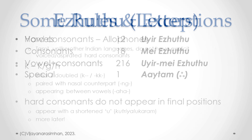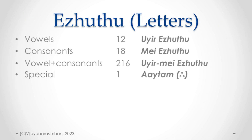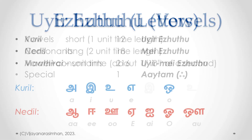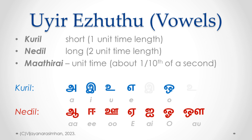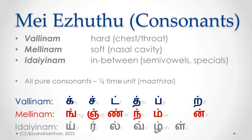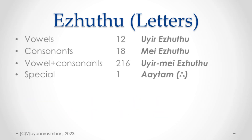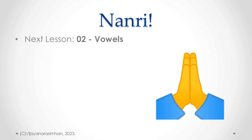To summarize: Tamil letters are basically 12 vowels and 18 consonants, classified into short/long counterparts and into hard, soft, and in-between categories. There are combinations of vowels and consonants, and one special letter called Aidam. We will learn the vowels in the next lesson and go from there. Thank you very much — Nanri.